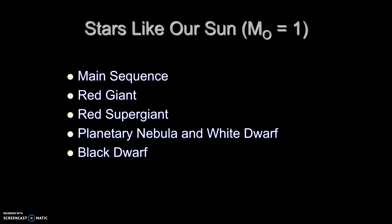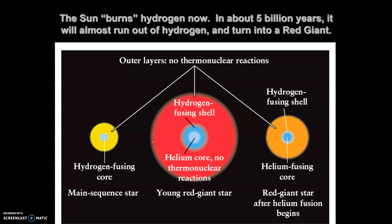For stars like our Sun, the sequence goes: main sequence → red giant → red supergiant → planetary nebula and white dwarf → finally a black dwarf. Our Sun burns hydrogen now, but in about five billion years it'll be almost out of hydrogen and turn into a red giant. In a main sequence star we have a hydrogen-fusing core, but in a young red giant we have a hydrogen-fusing shell while the helium core no longer has thermonuclear reactions. In the full red giant stage, there is a helium-fusing core.